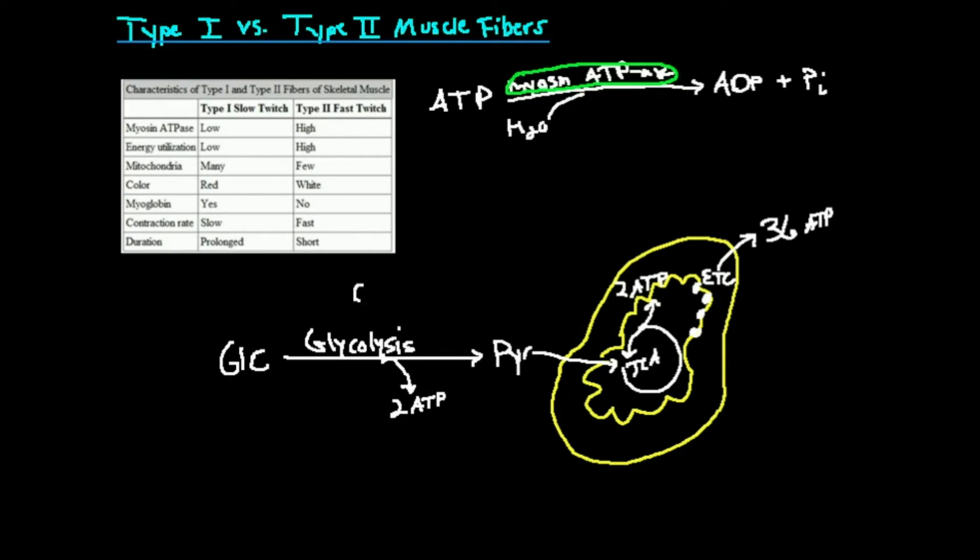So glycolysis takes place in the cytosol. It does not take place in the mitochondria. Very important point. However, the TCA cycle, and much more importantly, the electron transport chain, where you get 36 ATP, that occurs in the mitochondria.